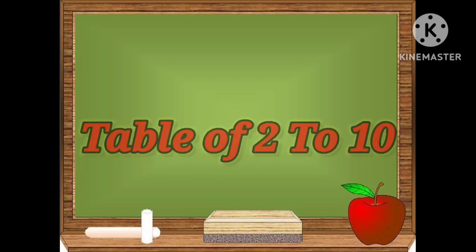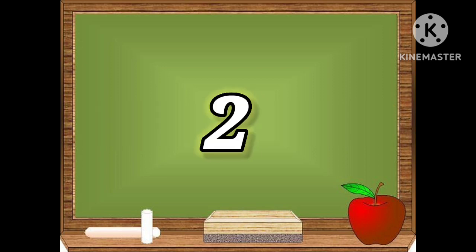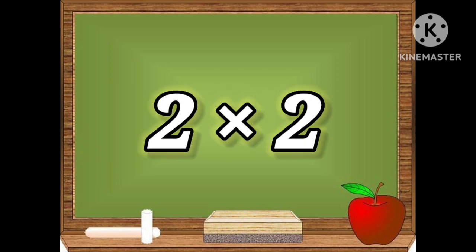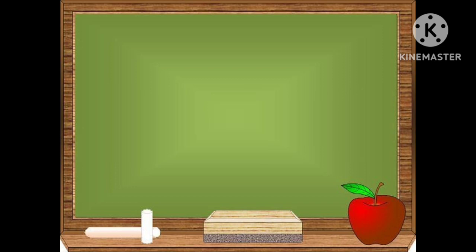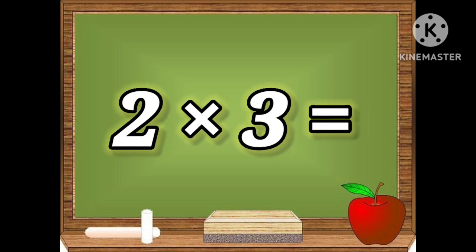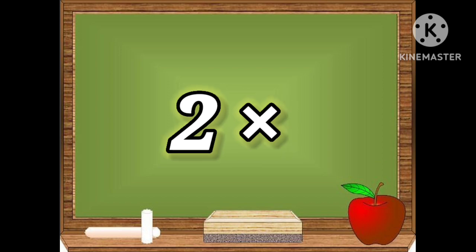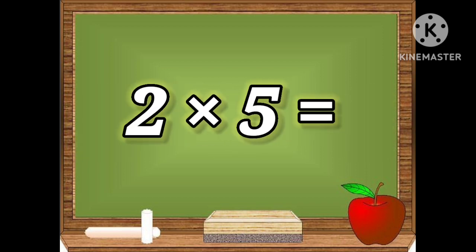Hello kids, let's learn the table of two to ten. Two ones are two, two twos are four, two threes are six, two fours are eight, two fives are ten.